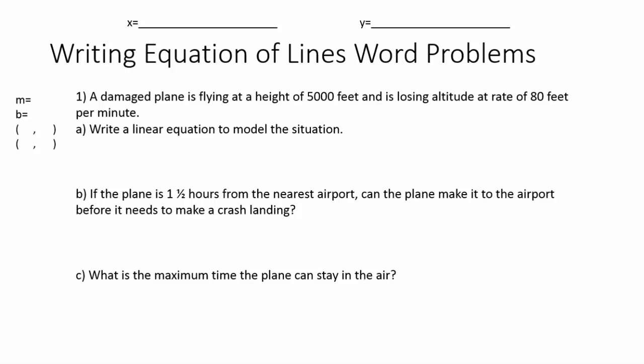The first example: a damaged plane is flying at a height of 500 feet and is losing altitude at a rate of 80 feet per minute. Write an equation to model the situation. Anytime I'm looking for a linear equation, I'm going to start by writing y equals blank x plus blank. My goal is to fill in the slope and the y-intercept to get the equation of the line.